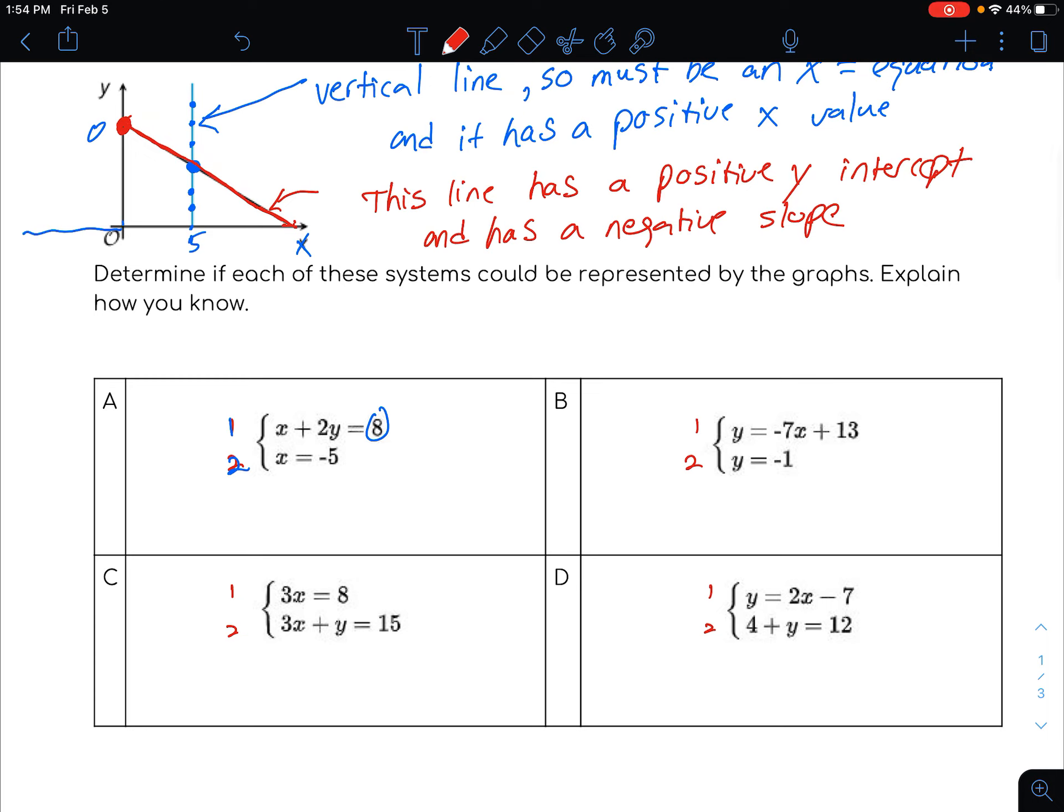All right, so let's look at A here. Look at this, it has an x equals negative 5. If it was x equals negative 5 for one of the lines, then that would be a vertical line because it's an x equals equation. But it would be way over here when x is negative 5, and that's not what we have. So we can just cross that one off right away.